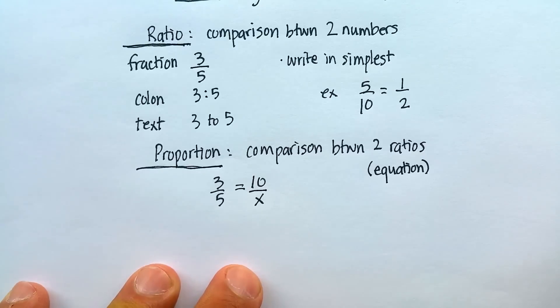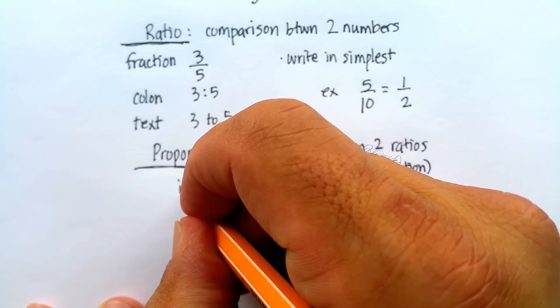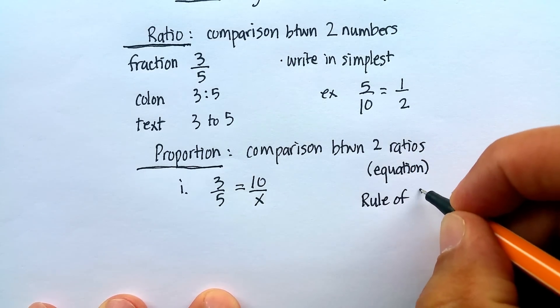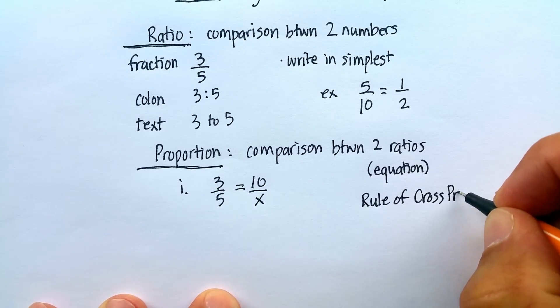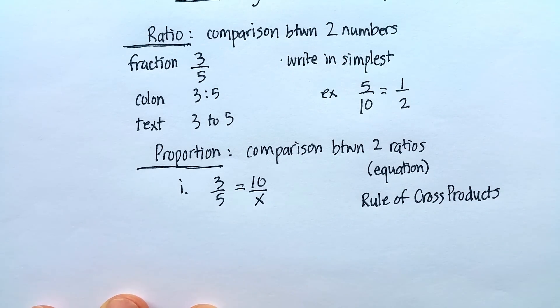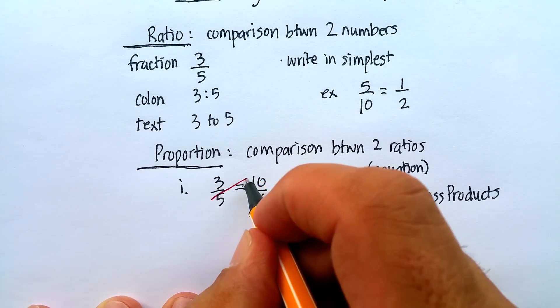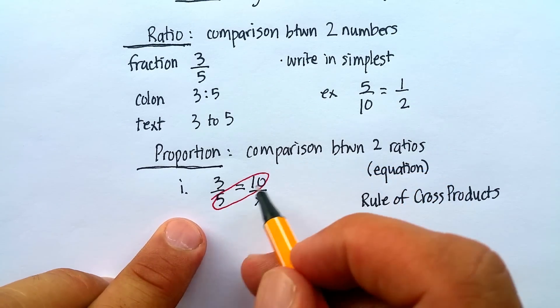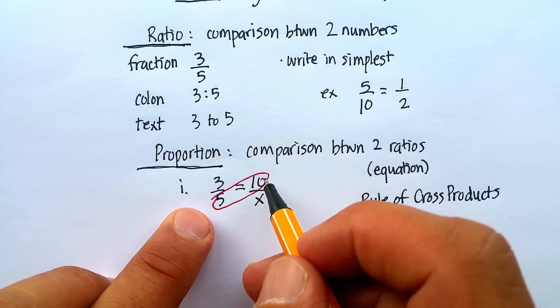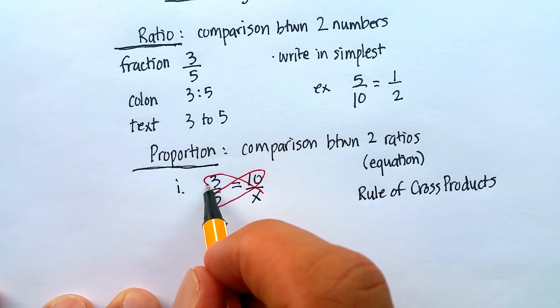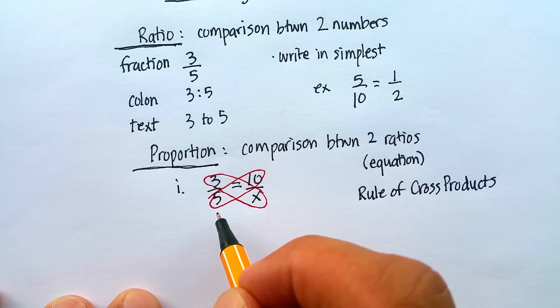Now, how would you solve something like this? How would you rewrite this in a way that you might be able to solve? Well, there is a rule called the rule of cross products that's used quite a bit in geometry. If I have an unknown in one of my ratios, I can find it by multiplying the denominator and the numerator of the opposite times, or is equal, and setting that equal to the denominator and the numerator of the opposite. So cross products.